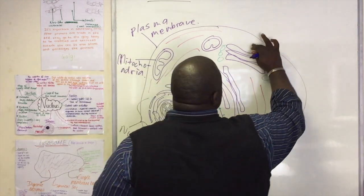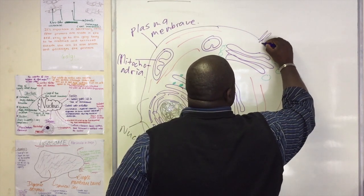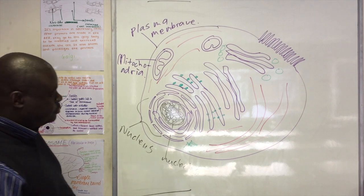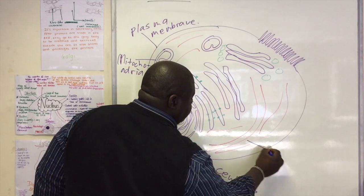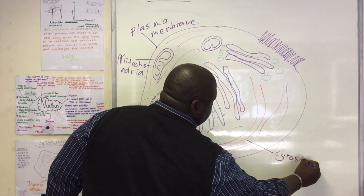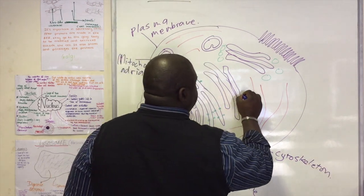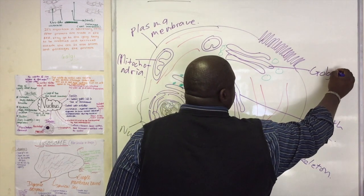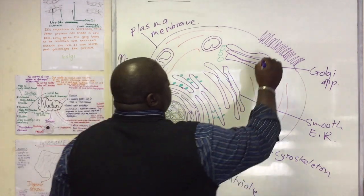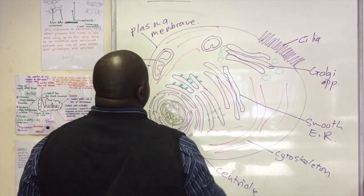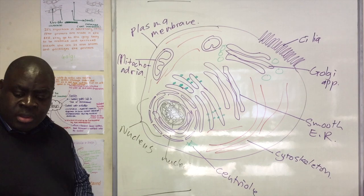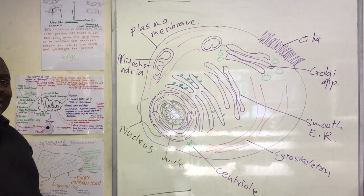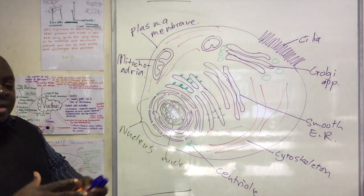Let's also add a few cilia, which are on the surface of the membrane. Okay, so the purpose of this session is not to go through all the structures again, but the most important thing is to understand what each one does — what is the role of each organelle, and it's about combining everything.